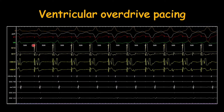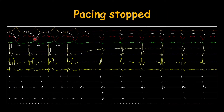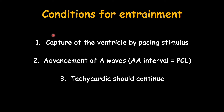Once we start pacing from the right ventricle the morphology of the QRS changes until it becomes fully captured. Once we are sure that the ventricle is being captured then we stop pacing to see the response of entrainment. Before seeing the response of entrainment there are some conditions which should be fulfilled. First, capture of the ventricle should be ensured by the pacing stimulus. Second, there should be advancement of A waves, meaning the AA interval should be equivalent to the pacing cycle length. Third, when we stop pacing, tachycardia should continue.